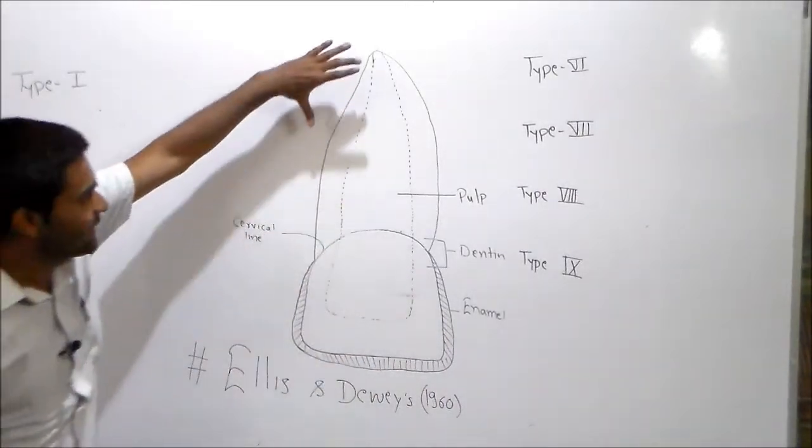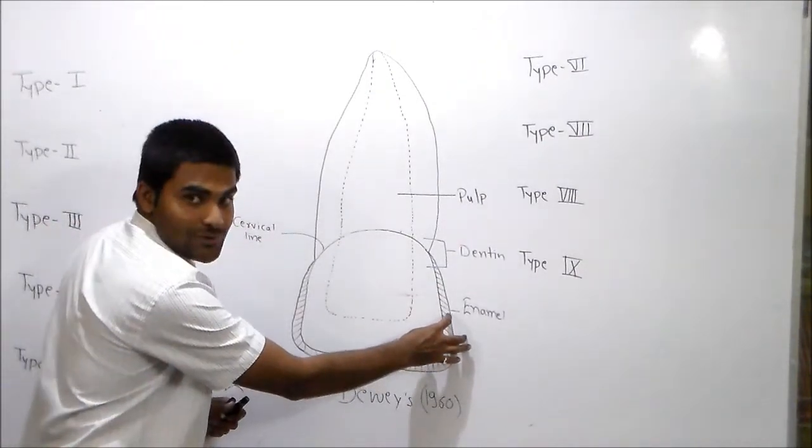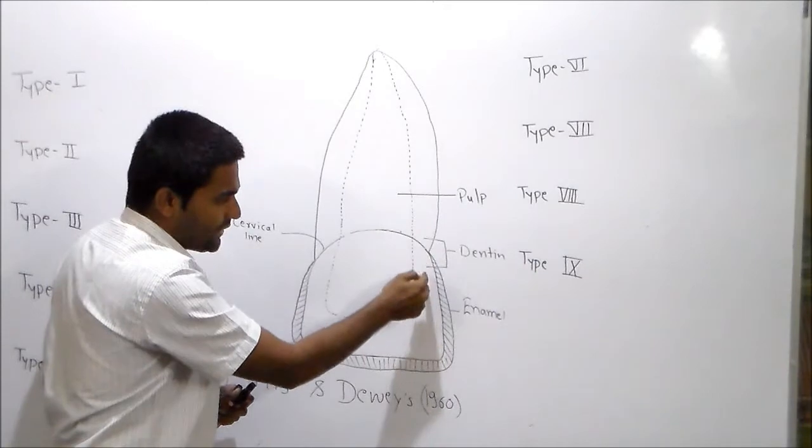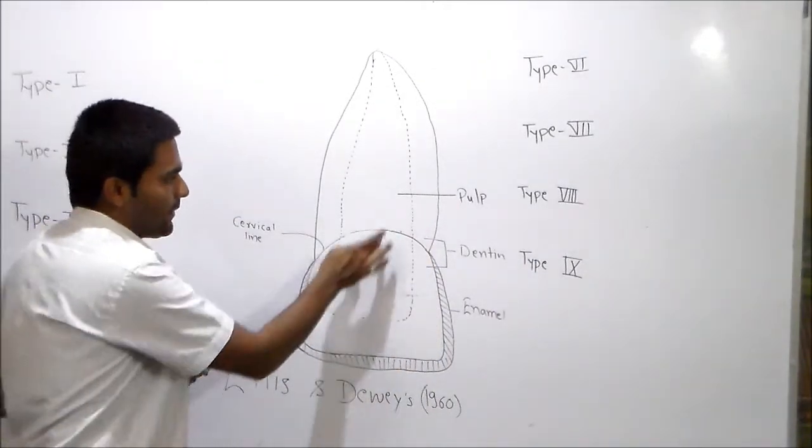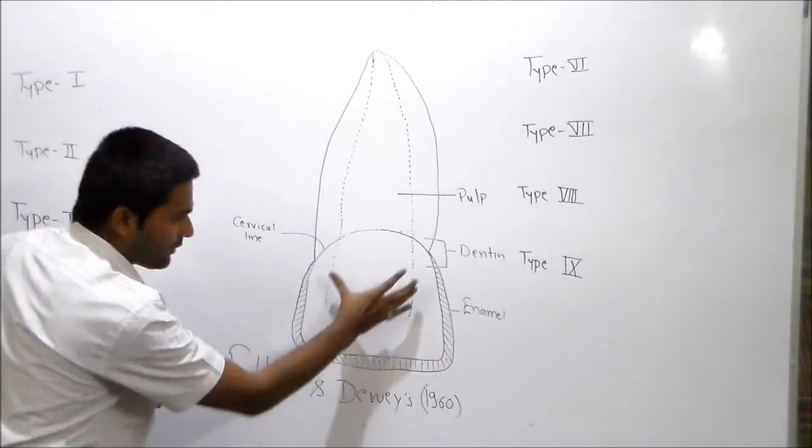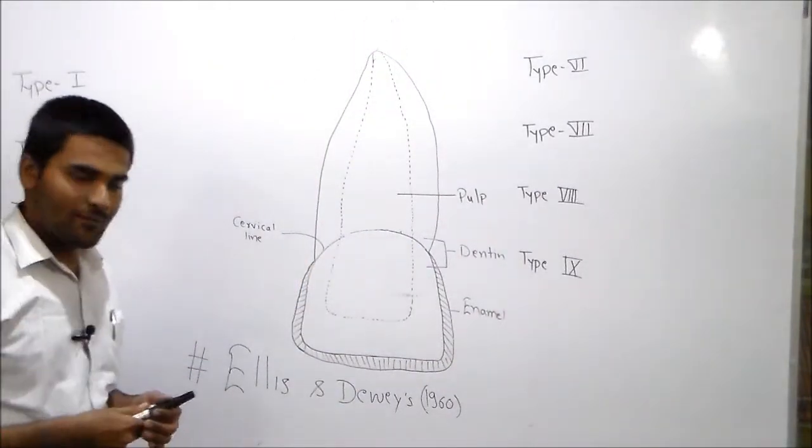This is the crown, my dear friends. This is enamel, outermost layer, dentin both in crown and root, and this is pulp. Crown, root, tooth.